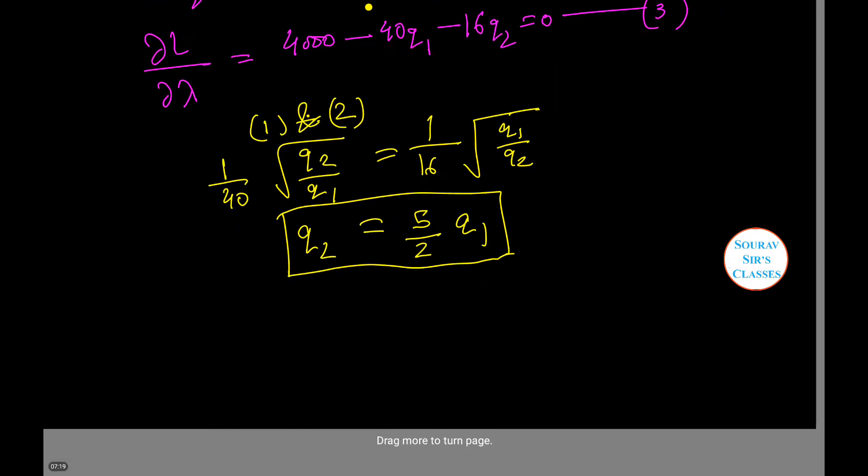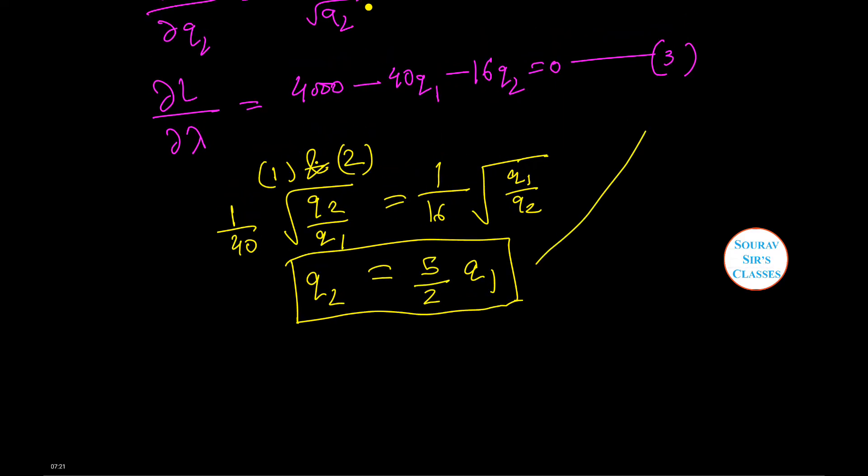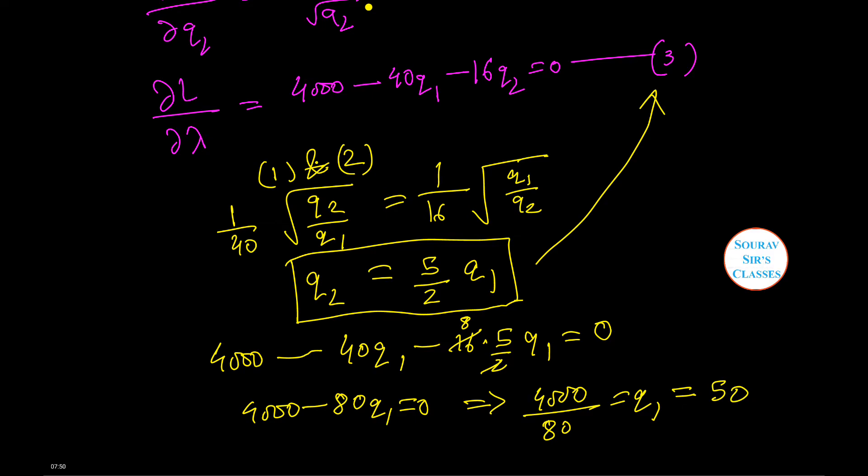Thus putting these values in equation 3, we have 4000 minus 40 Q1 minus 16 times 5 by 2 Q1 equals 0. Solving this we have 4000 minus 80 Q1 equals 0, or Q1 equals 4000 divided by 80, that is Q1 equals 50.